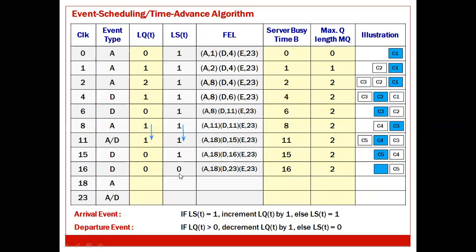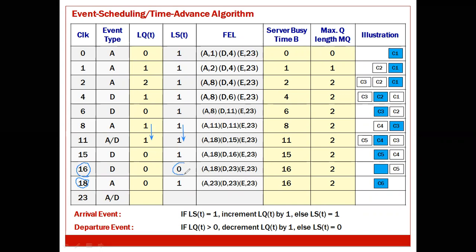At clock 18, event type is arrival (A). Check previous LS(t): it is 0, not 1. So instead of incrementing LQ, we set LS to 1 — the arriving customer immediately gets service. LQ remains 0, LS = 1. Future event list: A23, D23. Server busy time: between 16 and 18 the server was NOT busy (LS was 0), so busy time stays at 16 — just copy the same value.